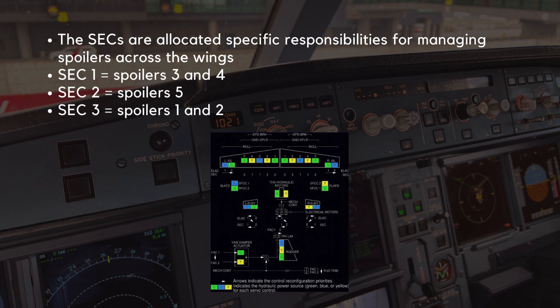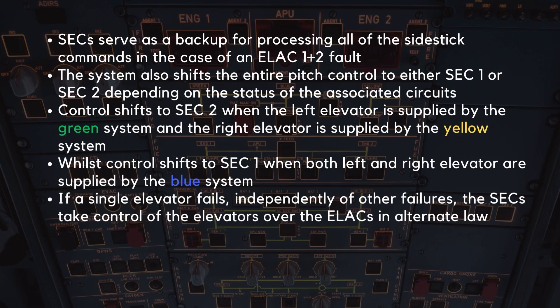The SECs are allocated specific responsibilities for managing spoilers across the wings. SEC 1 oversees spoilers 3 and 4, SEC 2 handles spoiler 5, and SEC 3 manages spoilers 1 and 2. The SECs serve as a backup for processing all of the sidestick commands in the case of an ELAC 1 plus 2 fault. The system also shifts the entire pitch control to either SEC 1 or SEC 2, depending on the status of the associated circuits. Control shifts to SEC 2 when the left elevator is supplied by the green system and the right elevator is supplied by the yellow system.